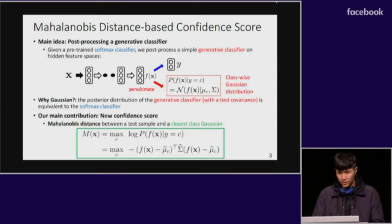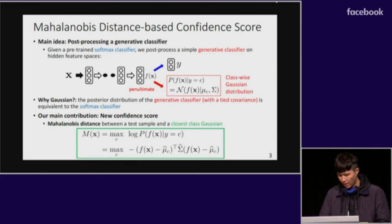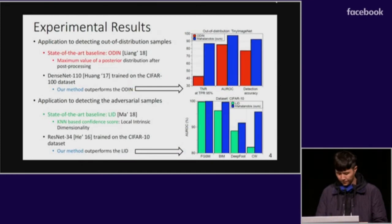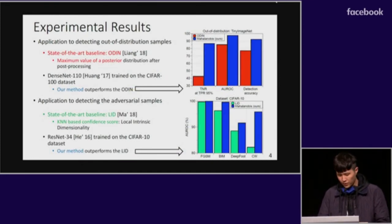So, using this generative classifier, we define a new confidence score as the Mahalanobis distance between a test sample and the closest class-conditional Gaussian distribution. In essence, we measure the log-likelihood of a test sample using a generative classifier. Our experimental results show that the proposed confidence score outperforms state-of-the-art baselines like ODIN and LID for detecting adversarial samples and out-of-distribution samples.